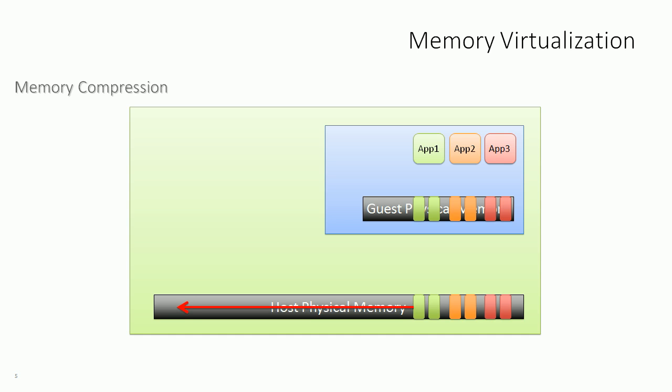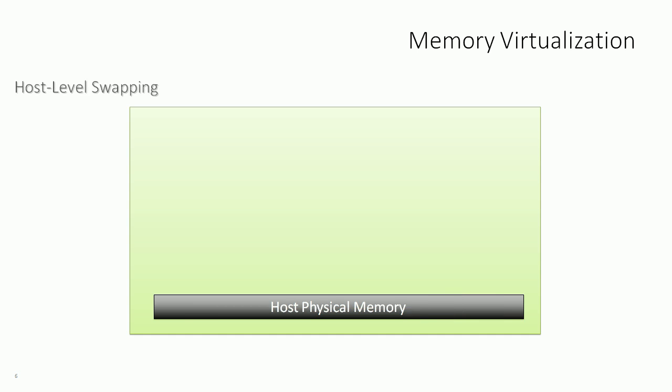If memory contention continues to worsen, at a certain threshold memory compression kicks in. The VM kernel looks at memory pages and compresses those where it can save 50 percent. The contents of those memory pages are compressed — similar to compressing a file with WinZip, which takes a little time. Anytime a virtual machine wants to access those compressed pages, they must be uncompressed first, so this comes with performance drawbacks — it's just trying to keep the host's head above water.